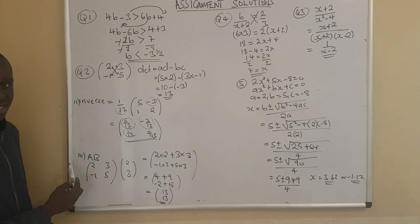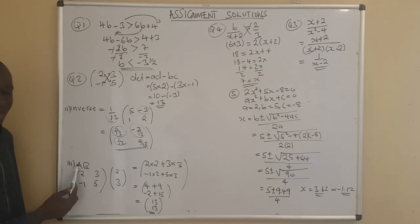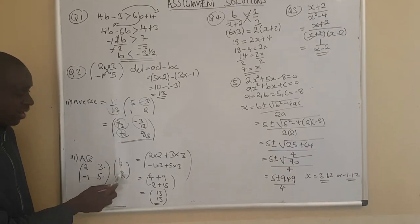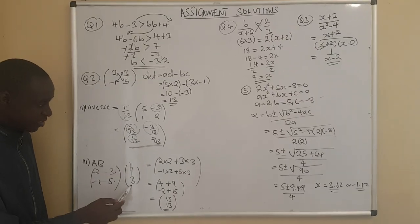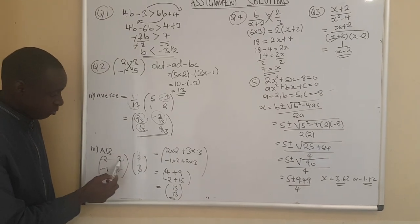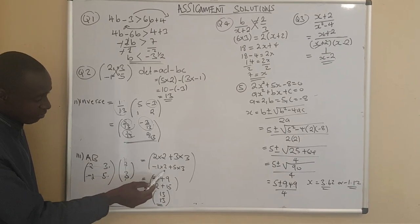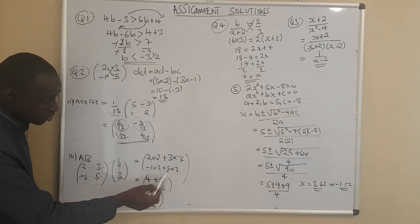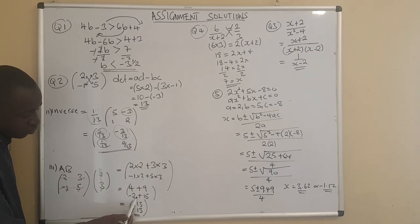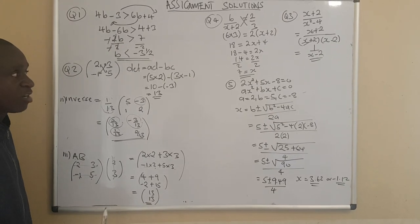The last part required finding AB — multiplying the matrices. The rule is that rows are multiplied by columns. So: 2 times 2 plus 3 times 3 gives 4 plus 9 equals 13. Negative 1 times 2 plus 5 times 3 gives negative 2 plus 15 equals 13. The final result of the matrix multiplication gives us 13 and 13.